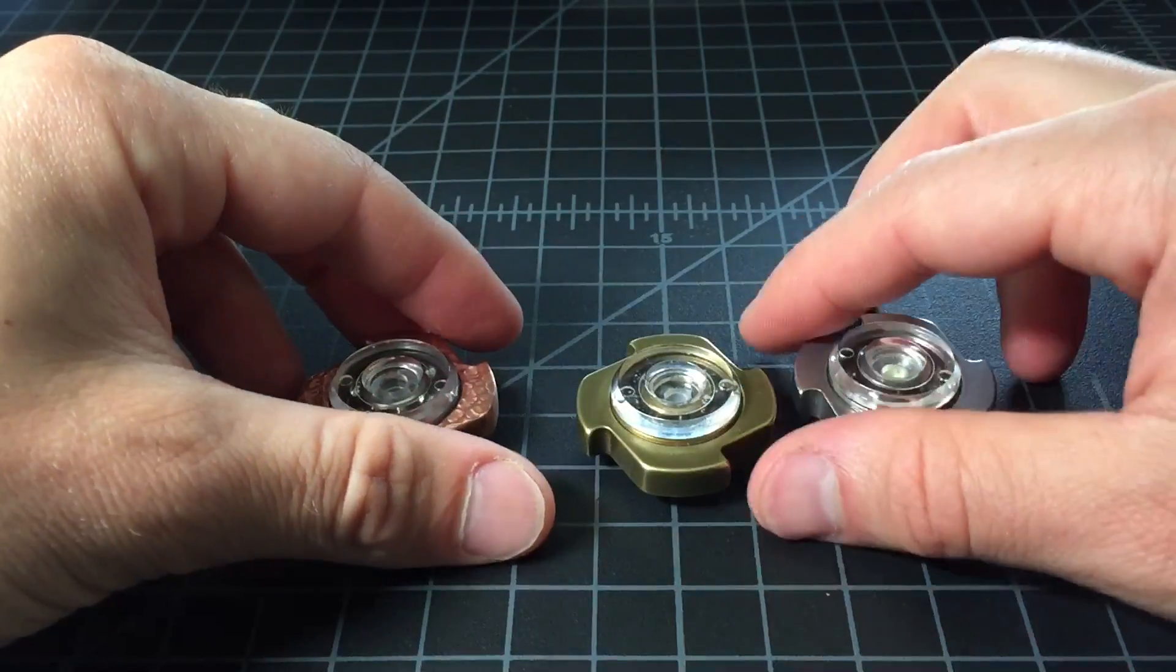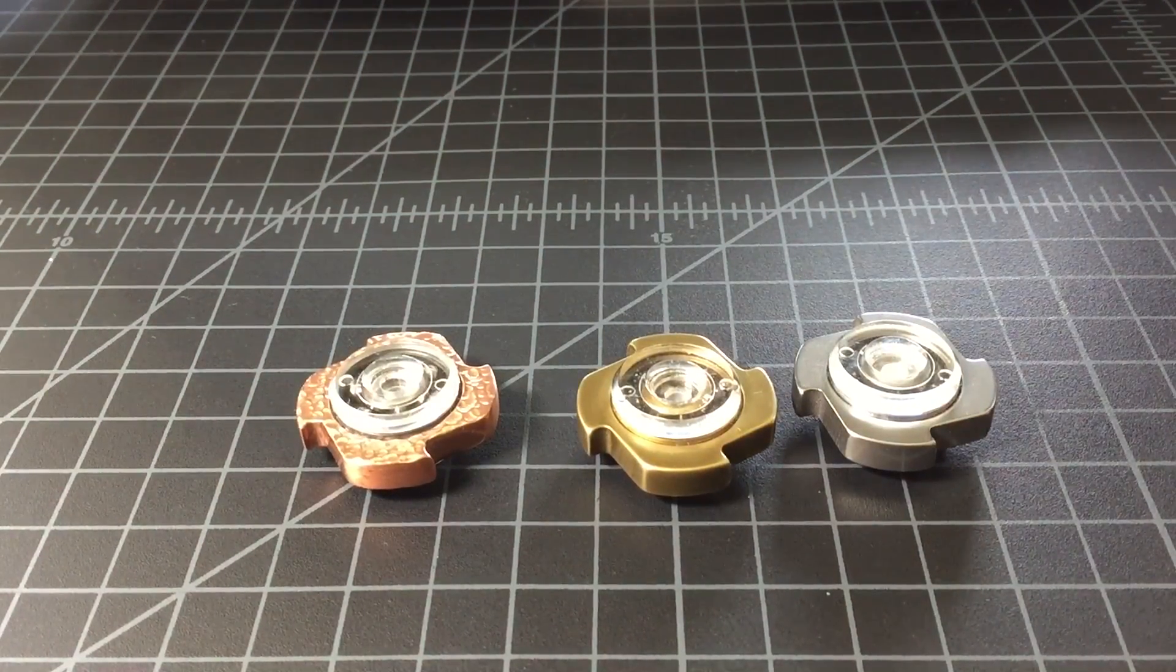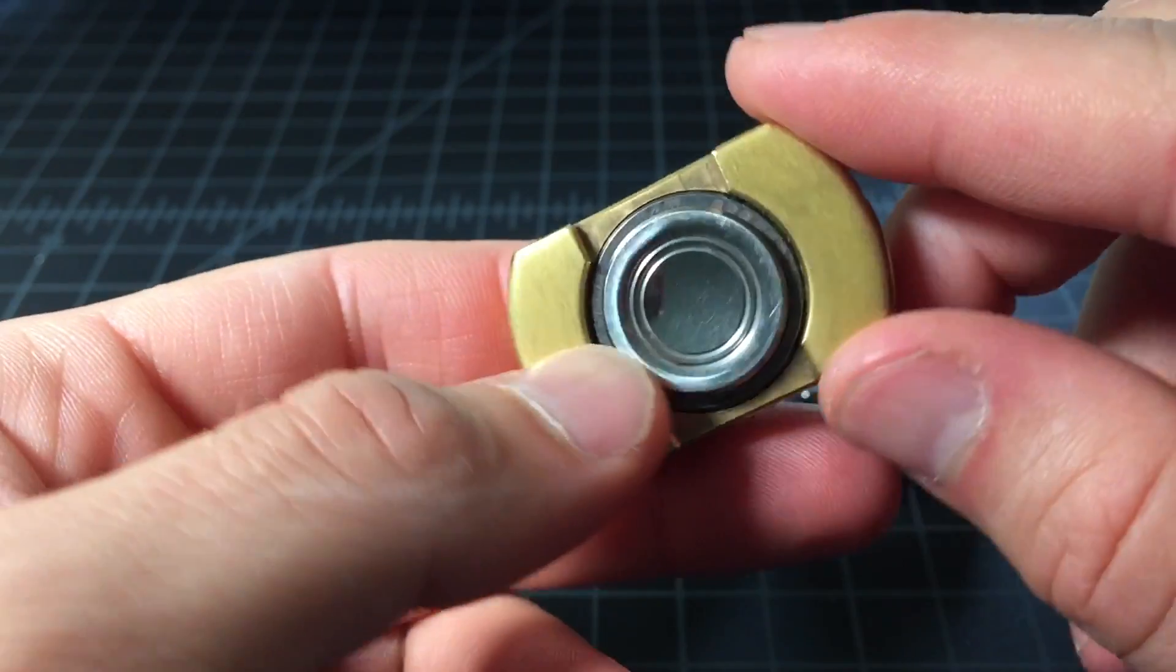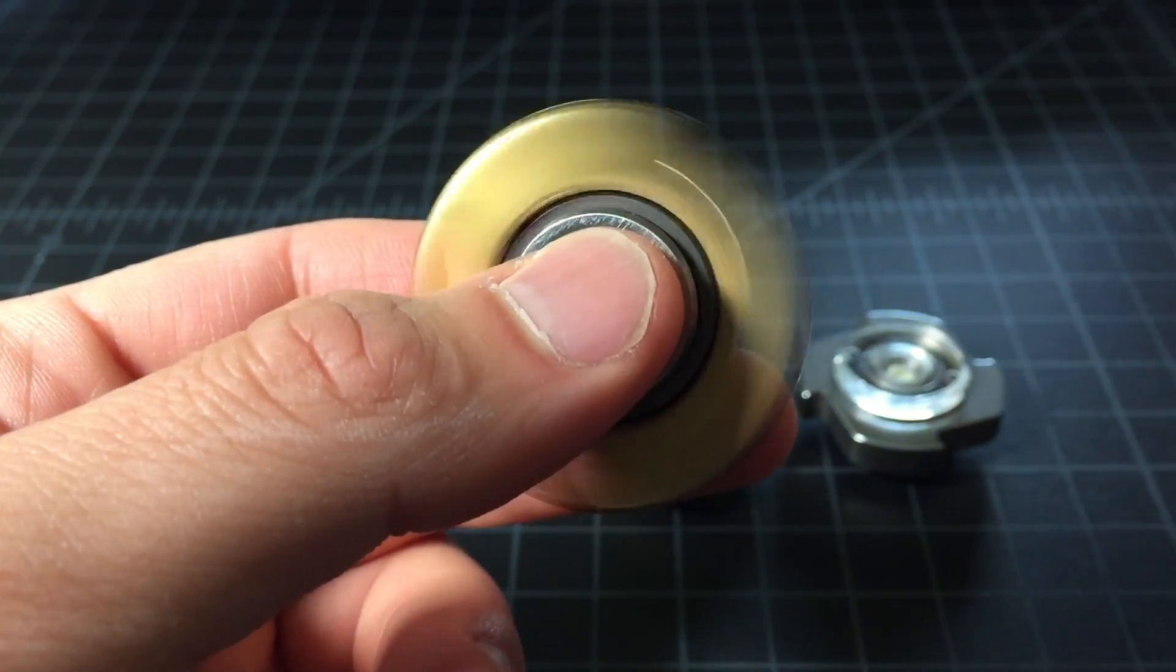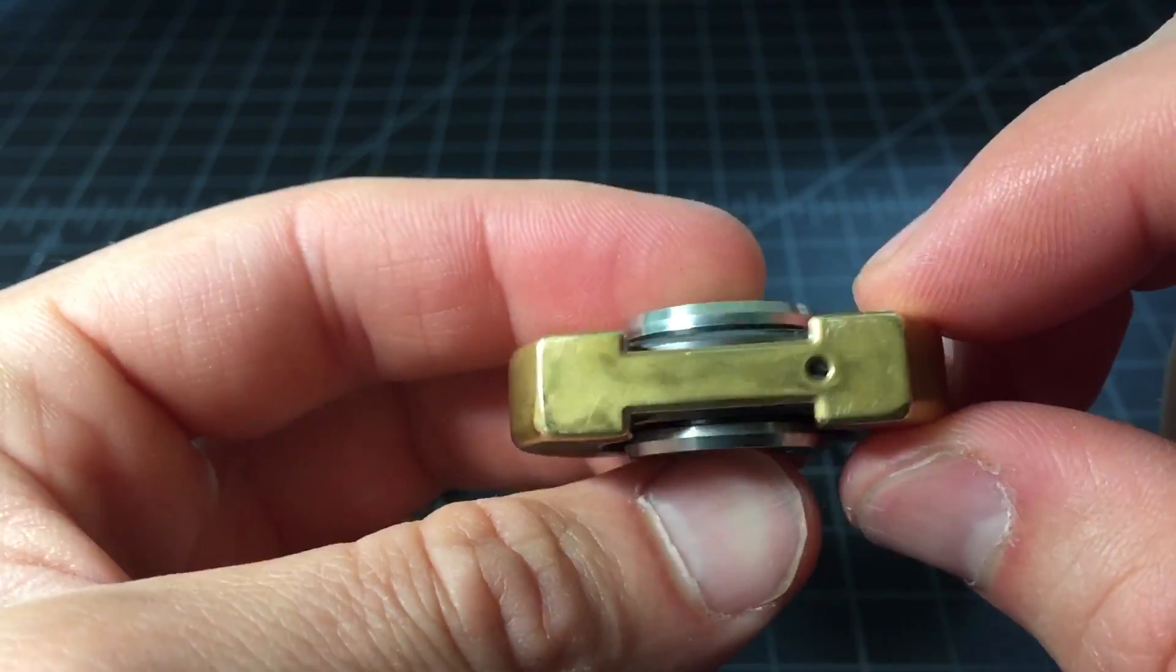So at this point you probably have a pretty good understanding of the sounds of each of the four bearing types. So this one is a little bit different which has the metal buttons on it, and then obviously it's in the Vorsto which is a much heavier spinner than the dab.